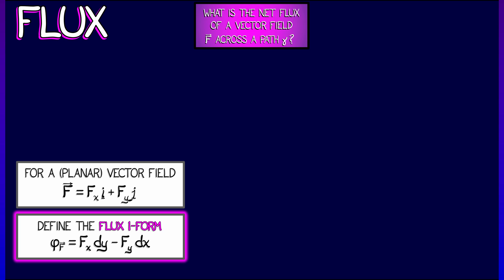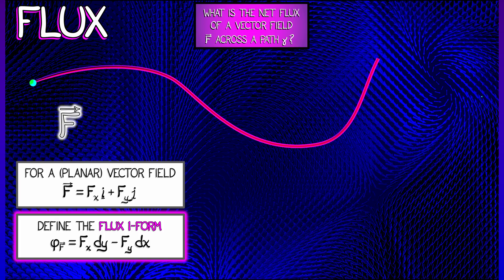Then we build the flux one-form associated to f. This is denoted φ_f, and it is given by f_x dy minus f_y dx.